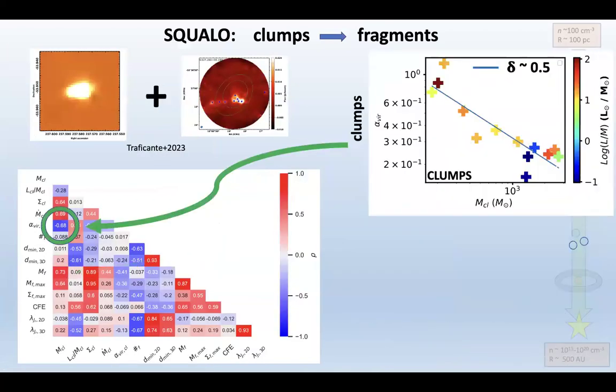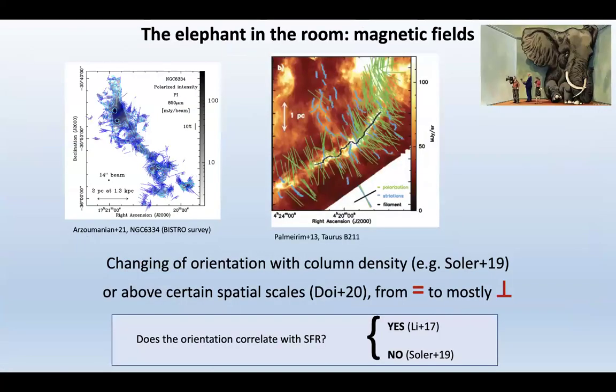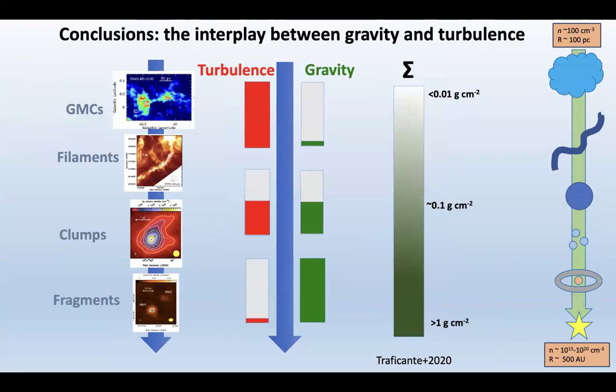There is a big elephant in the room: magnetic fields. We don't yet fully understand how they work at these scales. They may correlate with the star formation rate in some regions but not others. The picture I close with is the multi-scale fragmentation model, summarizing this interplay from large GMC scales down to core and fragment scales.